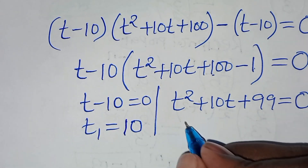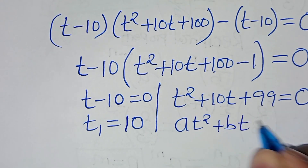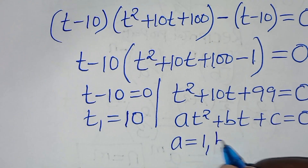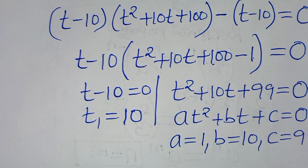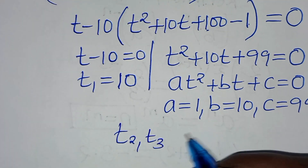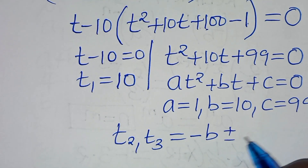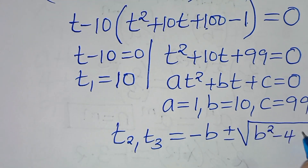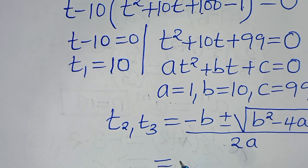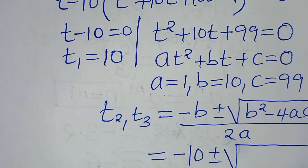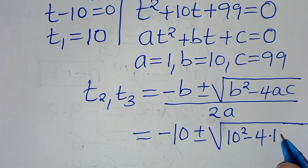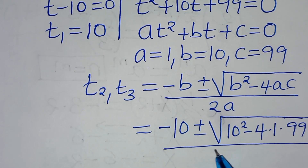The quadratic equation t² + 10t + 99 = 0 has coefficients a = 1, b = 10, c = 99. We solve for t₂ and t₃ using the quadratic formula: t = (−b ± √(b² − 4ac)) / (2a). Substituting: t = (−10 ± √(10² − 4·1·99)) / (2·1).